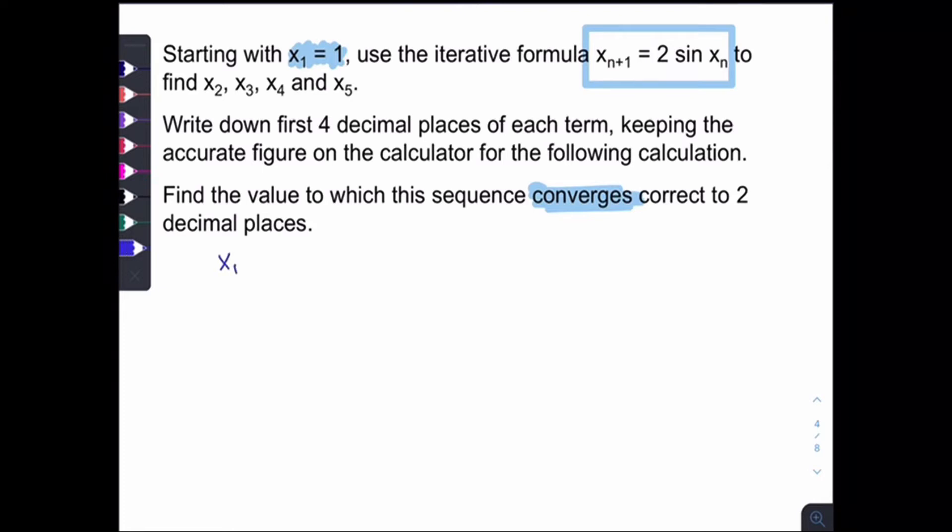So now let's try. We have x1 equals to 1. So to find x2, how to make use of the iterative formula? According to the formula here, if the n plus 1 here is 2, which means the n should be 1. So we should sub in 1 here. So the x2 should be equal to 2 sin x1.